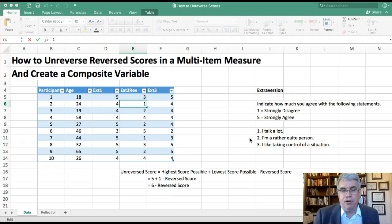Then number two is 'I'm a rather quiet person,' and this is the reverse of the first question. So a one would mean that you disagree that you're a quiet person, which probably means you're more extroverted. A five, that you strongly agree, would mean that you're less extroverted. And then three, 'I like taking control of a situation,' which is kind of a measure of dominance which is strongly associated with extroversion.